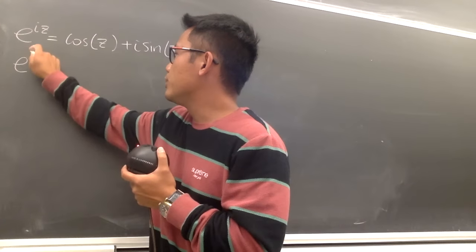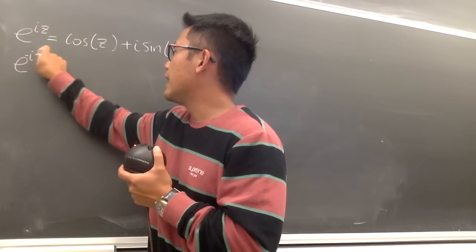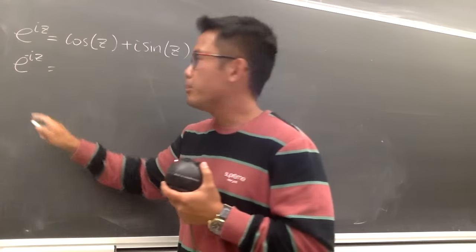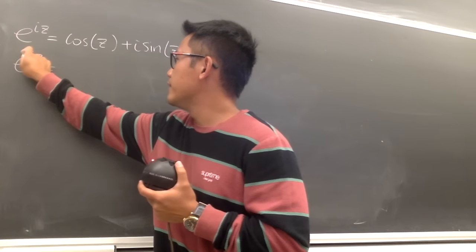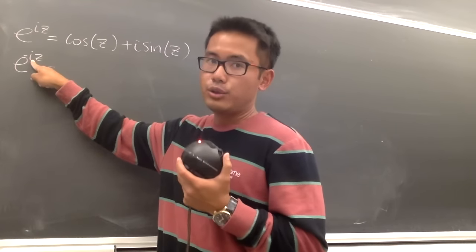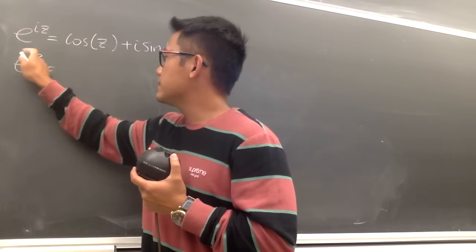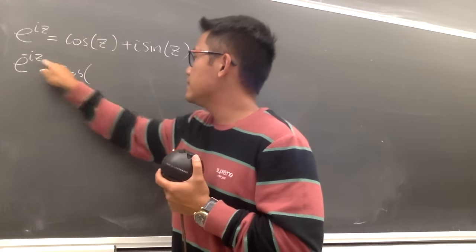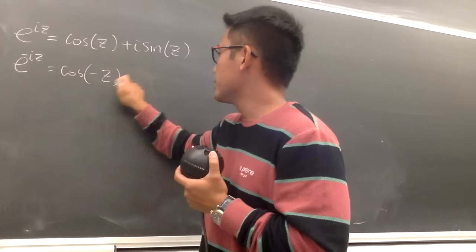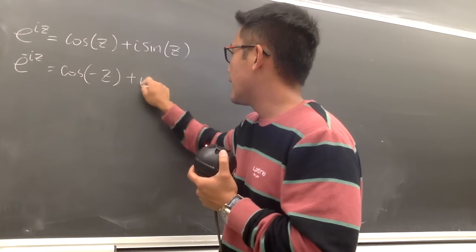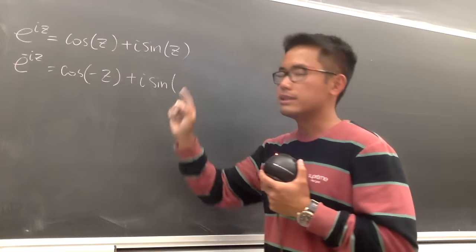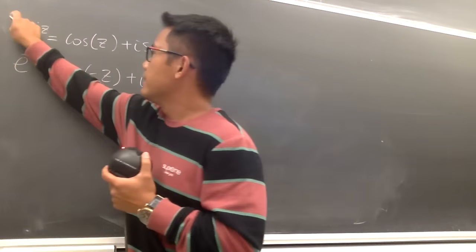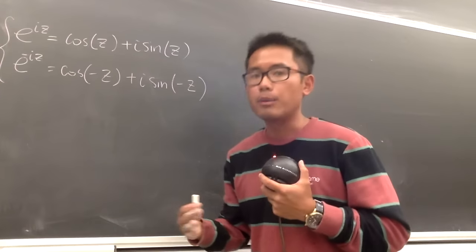Now I'm going to look at e to the negative iz. In this case the new input is negative z. We'll have cosine of negative z plus i sine of negative z. These are the two equations I'm going to work with.